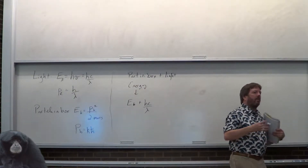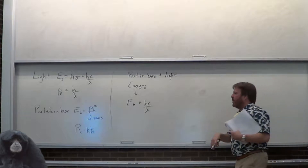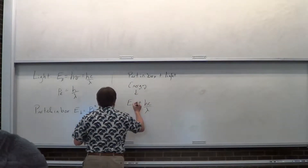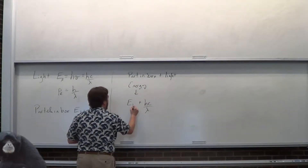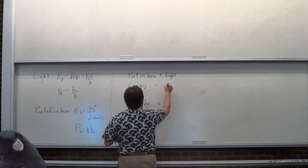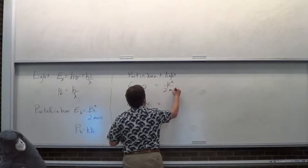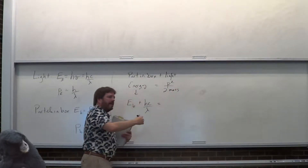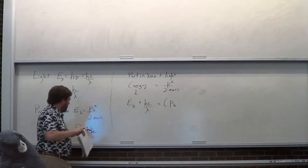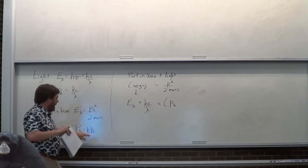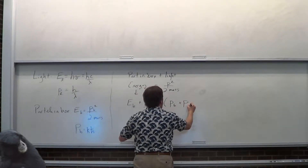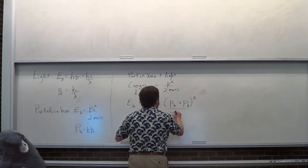It's the energy it had to begin with — hbar squared k squared over 2m — and of course it also has to have the energy of the light. This has to equal p squared over 2 times the mass, where p is the original p_box, which is k·hbar, plus the momentum of light, squared over 2 times the mass.